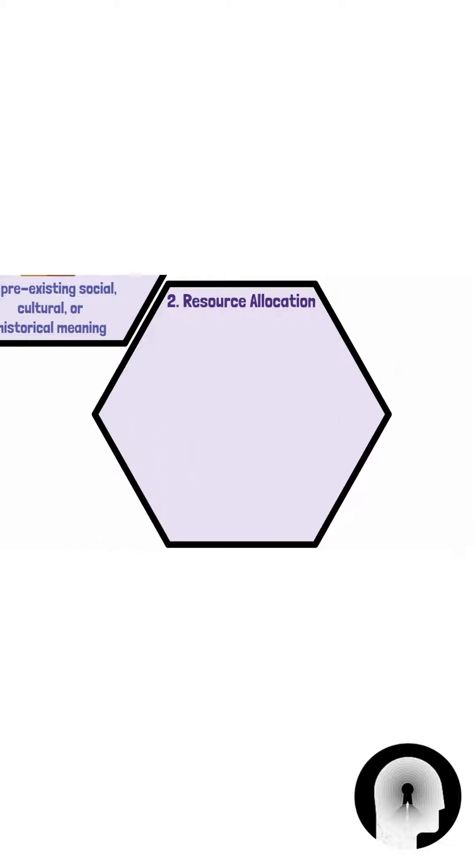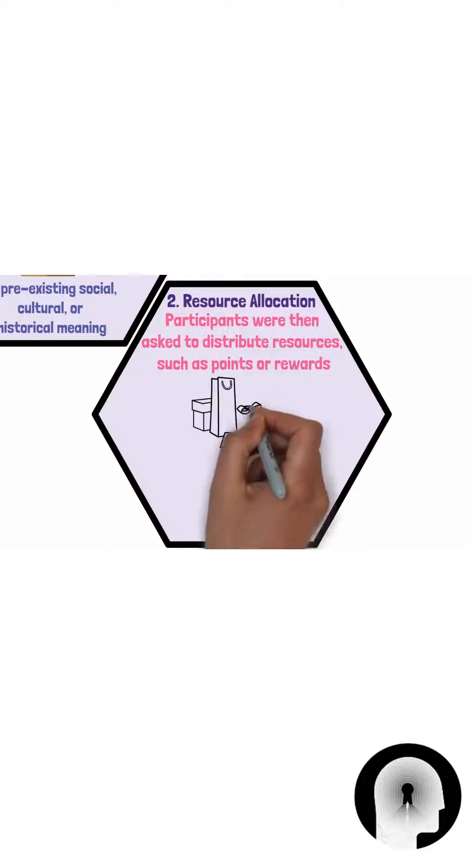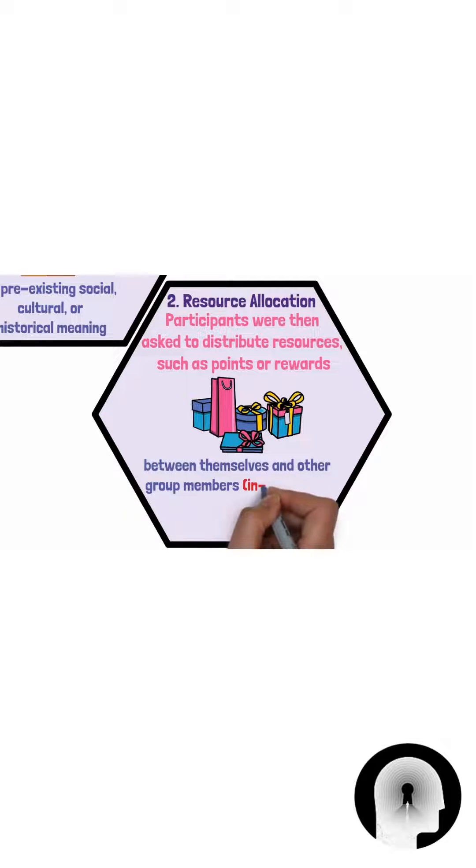Secondly, resource allocation. Participants were then asked to distribute resources such as points or rewards between themselves and other group members such as the in-group and members of the other group such as the out-group.